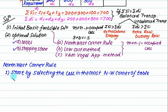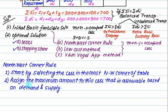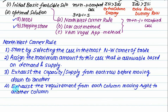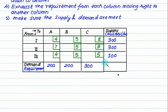Step number one: start by selecting the cell in the most North-West corner of the table. Assign the maximum possible value to this cell — whichever is minimum between demand and supply is allocated. Then cancel that row or column and move to the next North-West corner. Go on finishing your row first; if the first row is exhausted, go to the second row, then the third. In the column you move left to right, and in the row you move downward. Make sure supply and demand are meeting. First, check: this sum is 700 and this sum is also 700 — so this is balanced transportation and we will not add any dummy column or row.